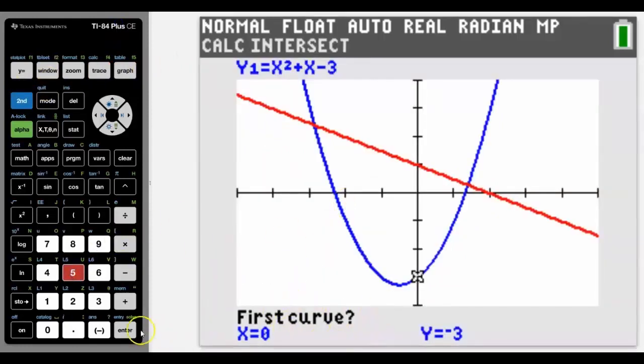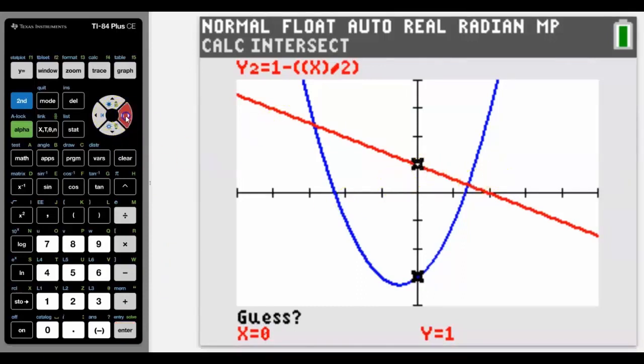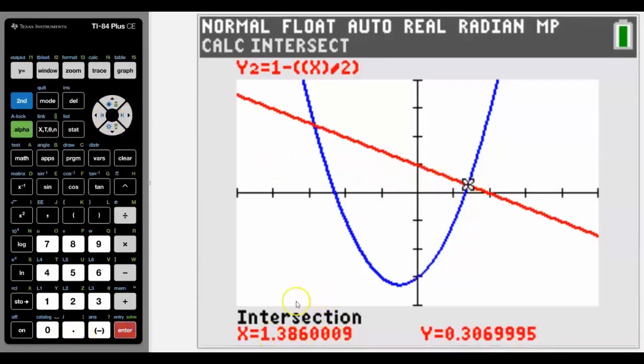It asks us to choose the first curve and the nice thing about having the CE is that it's color so we know it's the blue curve and the red curve or the straight line. That's the second one and then we've got to guess. The reason we want to guess is that there's two intersects. We need to move cursor to the one that we want to find the answer to. So if we press enter now there's the intersect point.